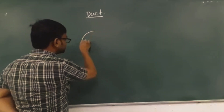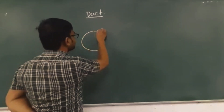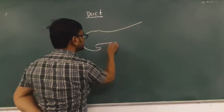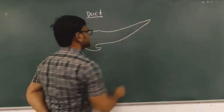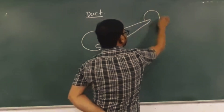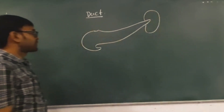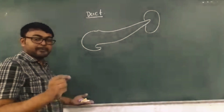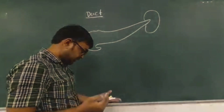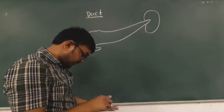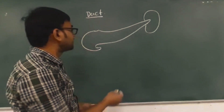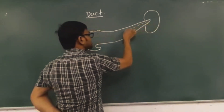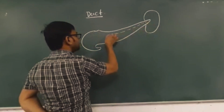This is the duct of the pancreas. This is the uncinate process and this is the body of the pancreas. This is the tail of the pancreas, which is split. On the posterior surface, the pancreas is mainly drained by two ducts: the main duct and the accessory duct. The main duct starts from the tail of the pancreas.